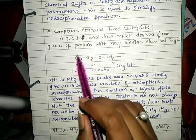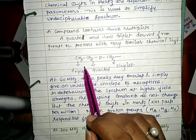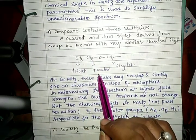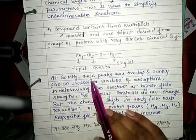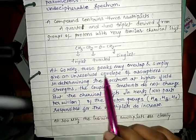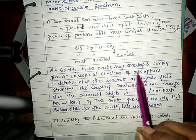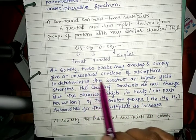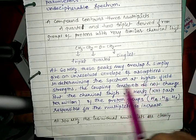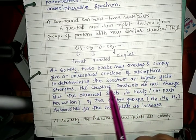This proton gives triplet spectra, this gives quartet, and this one is singlet. At 60 megahertz, these peaks may overlap and simply give an unresolved envelope of absorptions in determining the spectrum.